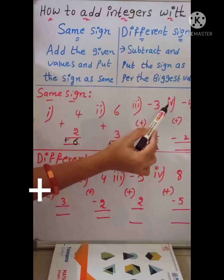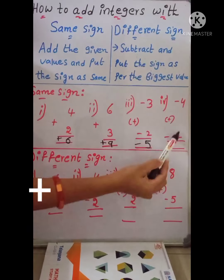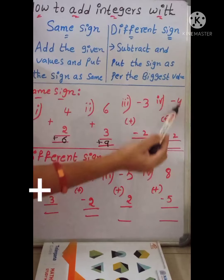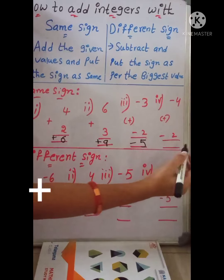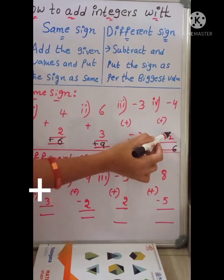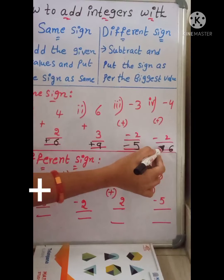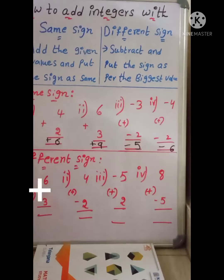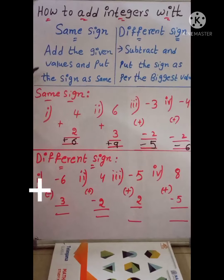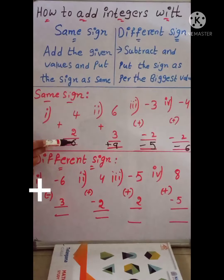The fourth example is minus 4 minus 2. These two are negative values, so just add them: 4 plus 2 equals 6. These two numbers have a negative sign, so just put the sign as negative, giving us negative 6. To summarize: whenever we are adding numbers with the same sign, just add them and put the sign as the same.